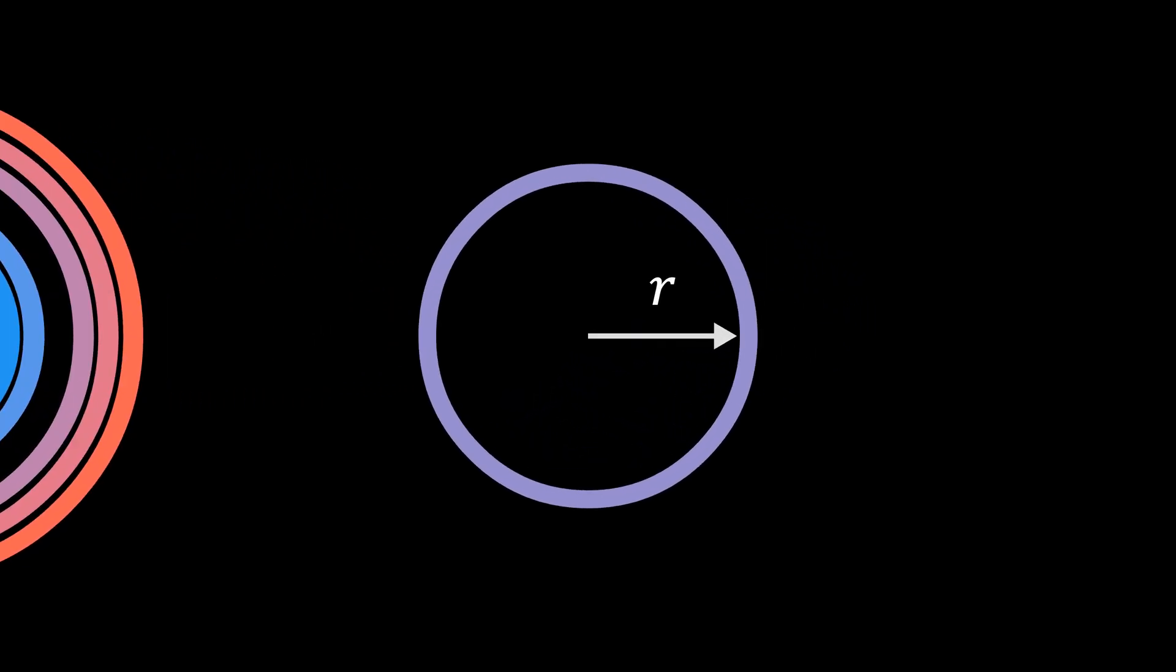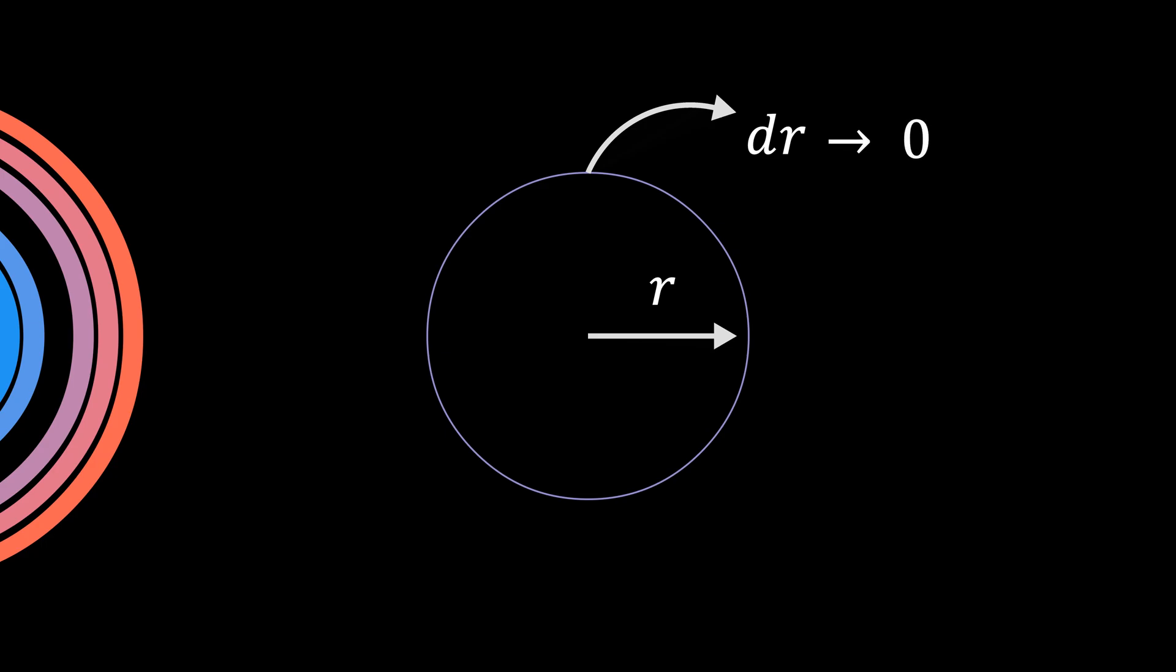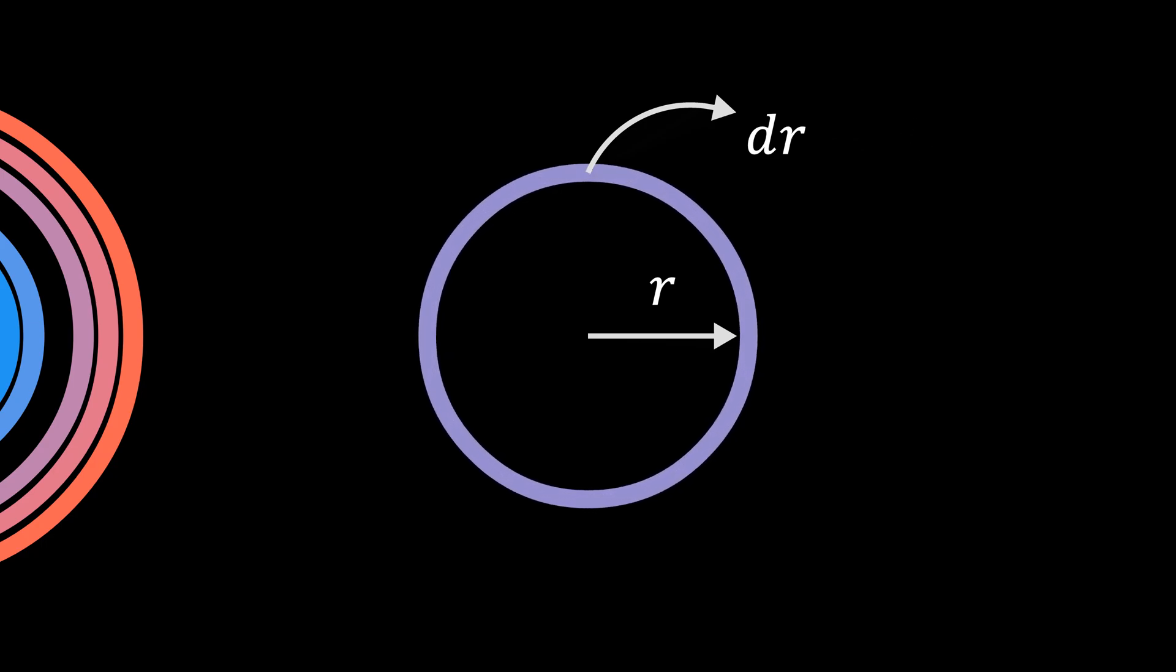Let's isolate one such ring of radius r and thickness dr. While dr is extremely small in reality, close to zero, for visualization purposes I'm going to show it with finite thickness. What I'm interested in is the area of this ring dA, and that would be the product of its circumference 2πr and its thickness dr.